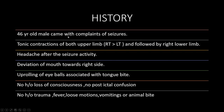History: a 46-year-old male came with complaints of seizures, tonic contractions of both upper limbs, more on the right, followed by right lower limb, headache after the seizure activity, deviation of mouth towards the right side, upper lip, eyeballs, and tongue bite. No history of loss of consciousness, no postictal confusion, no history of trauma, fever, loose motions, vomiting, or animal bite.